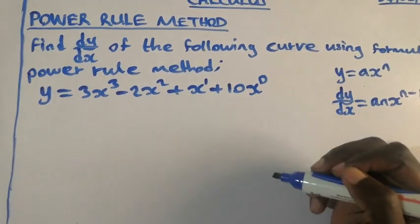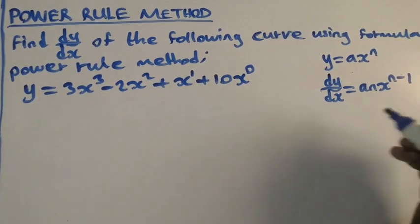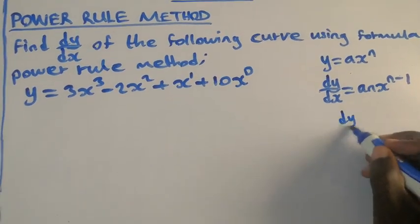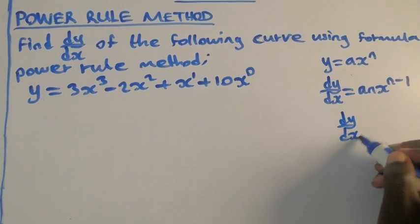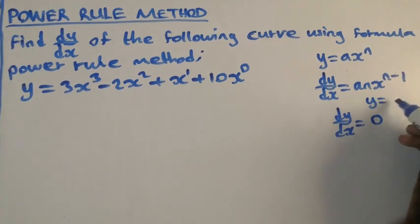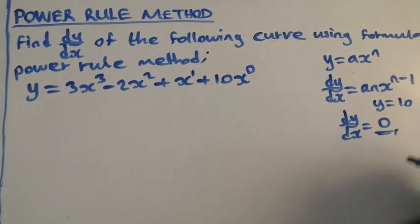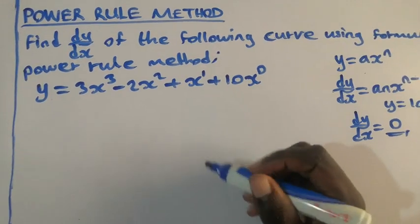Now under calculus, whenever you are differentiating the constant, its derivative equal to 0. So dy/dx of a constant number equal to 0. So if you have y = 10, its derivative will be just 0.